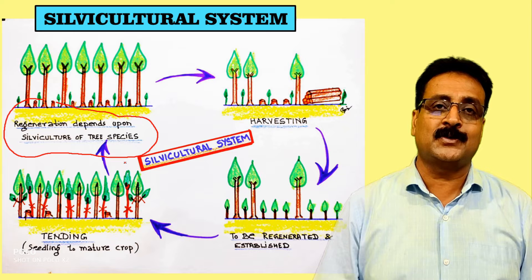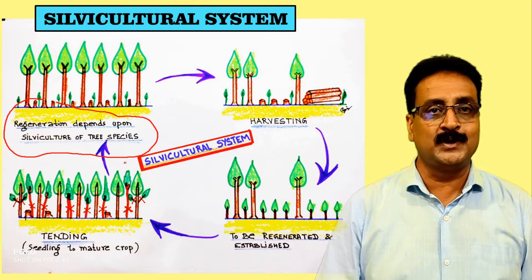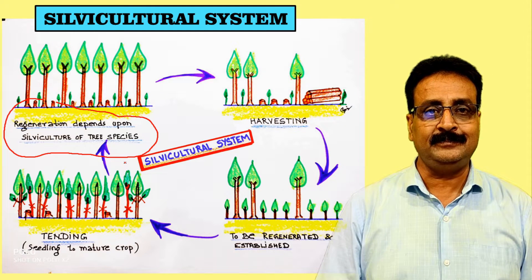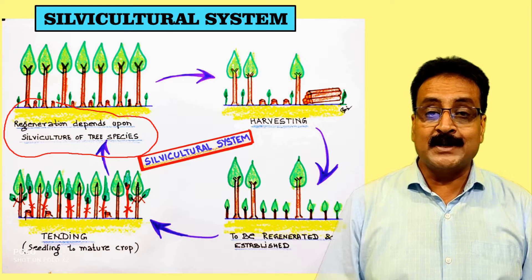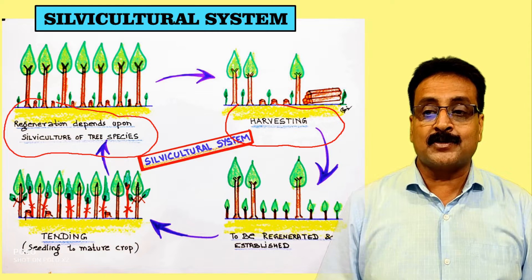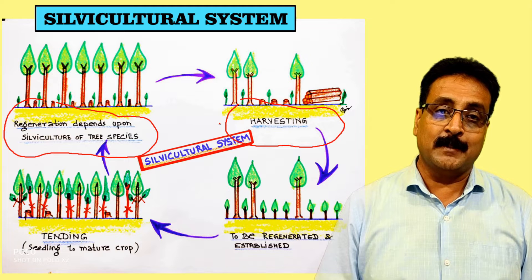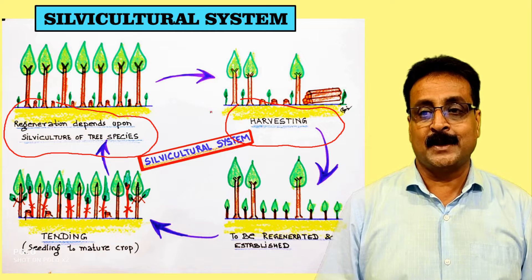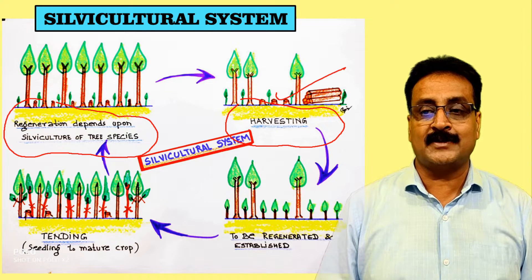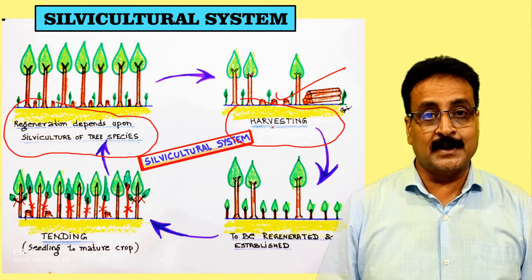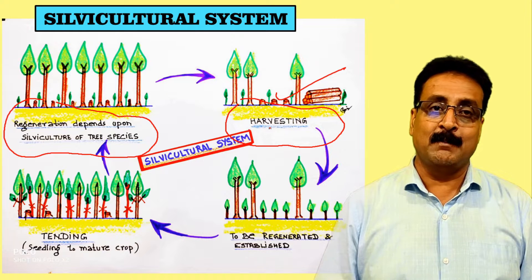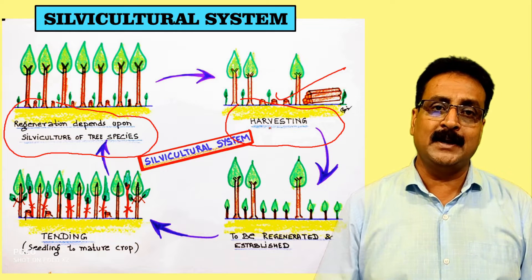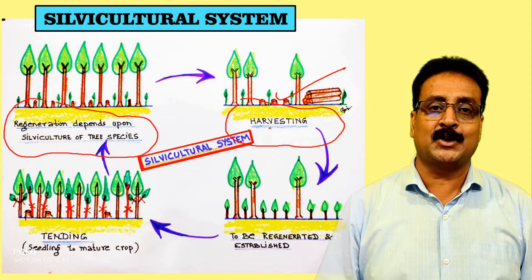Harvesting is a very essential process in forestry from which we get revenue, but harvesting should be done by knowing the silviculture of the tree species. This component — harvesting — has to be done maybe stepwise, maybe by clear felling, maybe in one or two fellings, and that depends on the silviculture of the tree species.